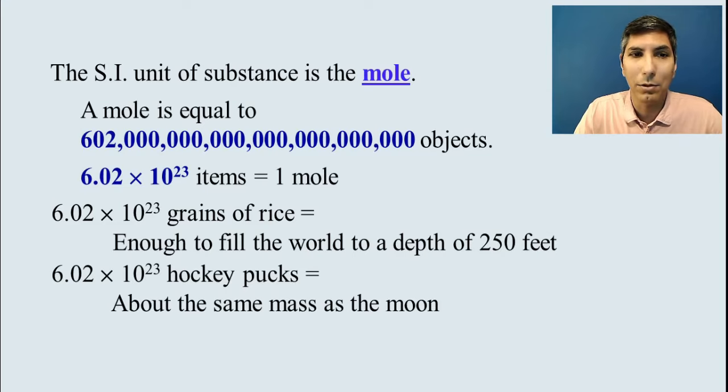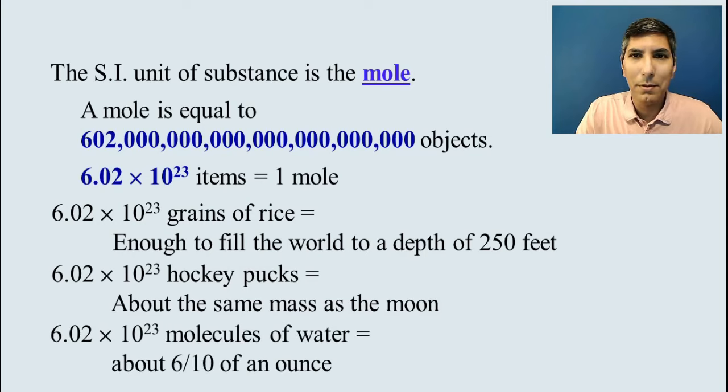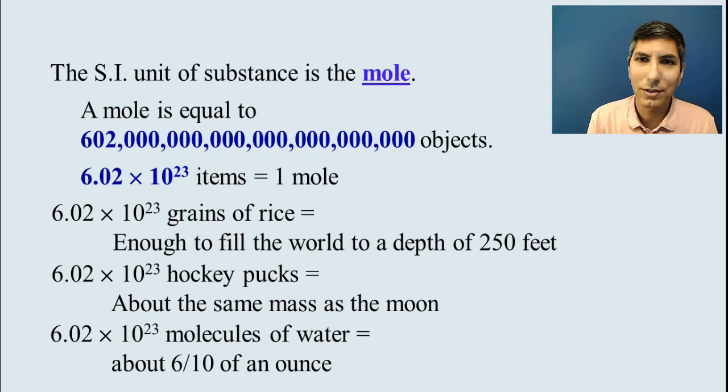If you had about that number of hockey pucks, that would have about the same mass as the moon. On the same scale, that many molecules of water, it's a very small amount. In fact, it's about 18 milliliters, or about six-tenths of an ounce of water. So, by thinking about this, we can see how large this number is. By the way, this number is 602 sextillion, 6.02 times 10 to the 23rd.